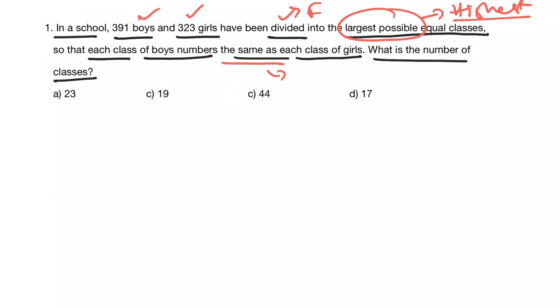Now check the options. 44 is an even number. Even number cannot be a factor of odd numbers, so option C is eliminated.